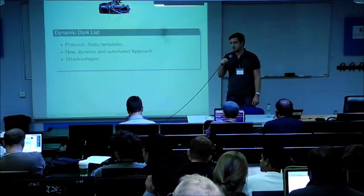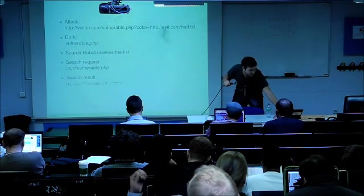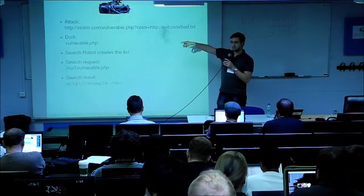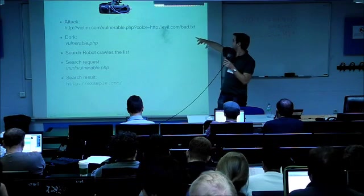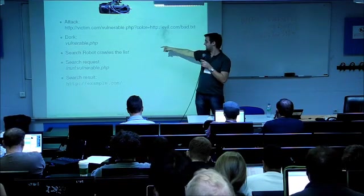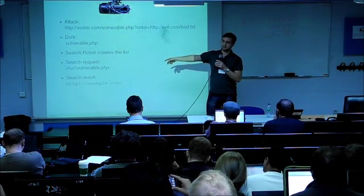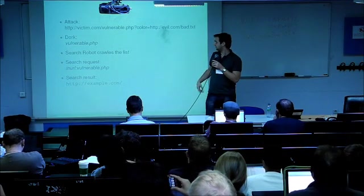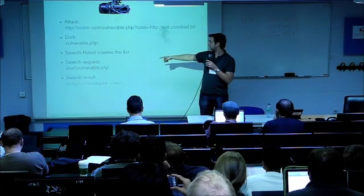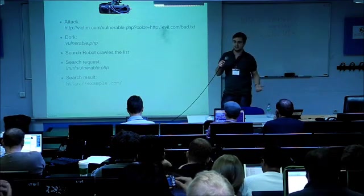I already talked about previous approaches, which was static templates or maybe some application setup. Then we started to have a new approach, which is the dynamic dork list. Let me show you on the next slide. We have this attack. The victim.com is our honeypot. Vulnerable.php is our vulnerable file. There are some parameters that inject the file called badtxt. We take the dork, which is in this case the vulnerable.php, and place it on a list on our index page. Then a search robot comes by, crawls our page, puts the dork in its log. And if the attacker Googles for this dork, our honeypot shows up in the search result and he probably attacks the honeypot.